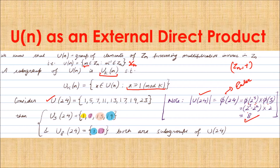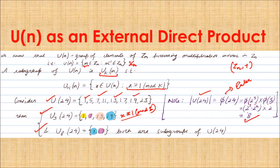There are two subgroups of U24. One is U3(24): the four elements of U24 satisfying x ≡ 1 mod 3, which are {1, 7, 13, 19}. The other is U8(24): the elements satisfying x ≡ 1 mod 8, which are {1, 17}.